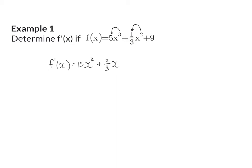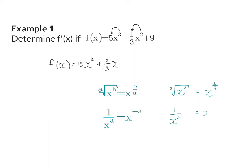Before we look at another example, I am going to remind you of two notations that are important. Firstly, you need to be able to change between root form and exponential form. For example, the cube root of x squared can be rewritten as x to the power of 2 divided by 3. Then, you also need to remember how to rewrite a variable in the denominator using your law. For example, 1 over x cubed can be written as x to the power of minus 3. These two laws are important because you cannot use your rules of differentiation if there are variables in a root or in the denominator.